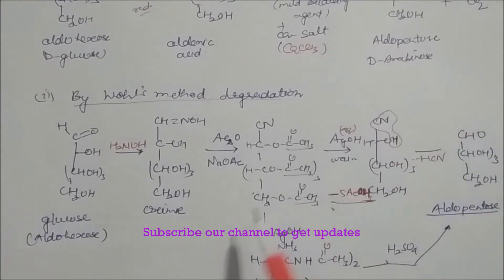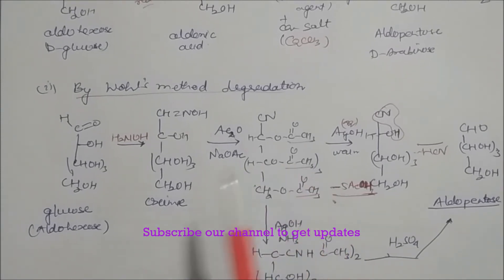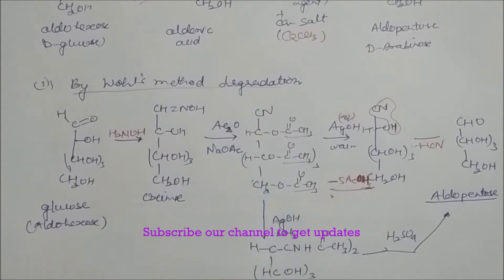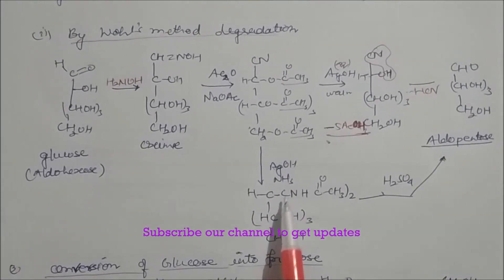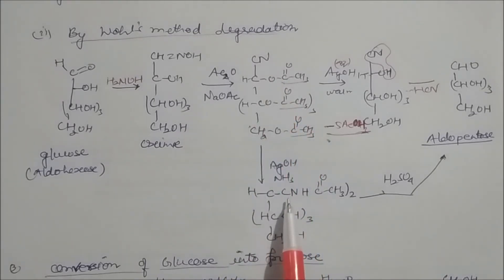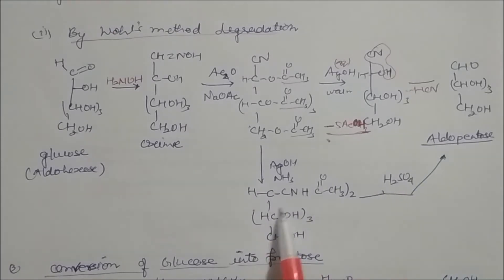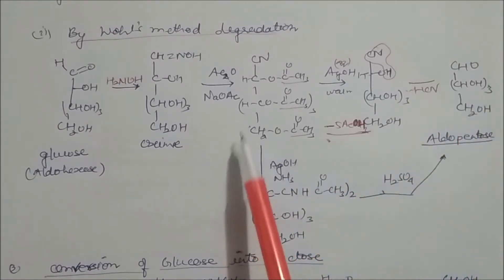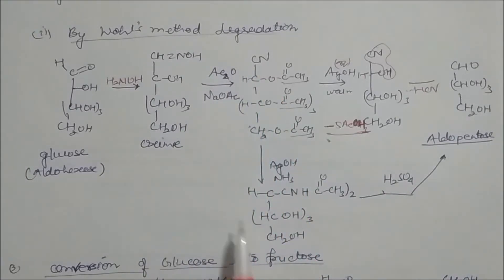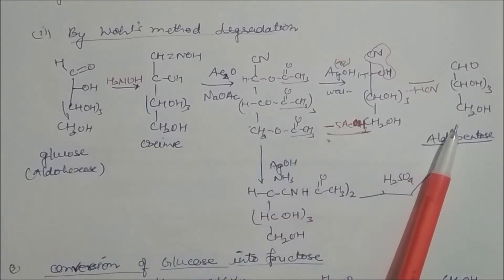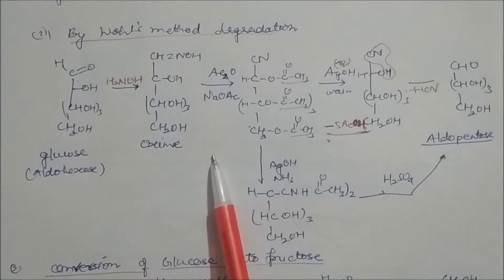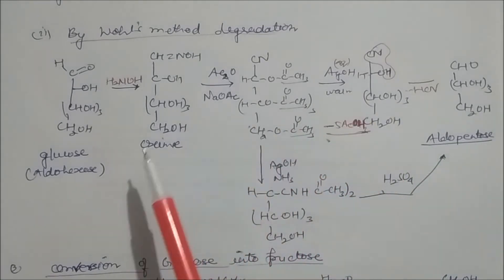On heating, the CN group is eliminated and the compound is converted into a pentose sugar — demonstrating chain shortening by removal of one carbon. Alternatively, treatment with silver hydroxide plus ammonia causes ammonia to react with the CN group, giving an intermediate with a C=N double bond containing NH groups. Treatment in acidic medium again yields the pentose sugar. This is Wohl degradation converting hexose to pentose.